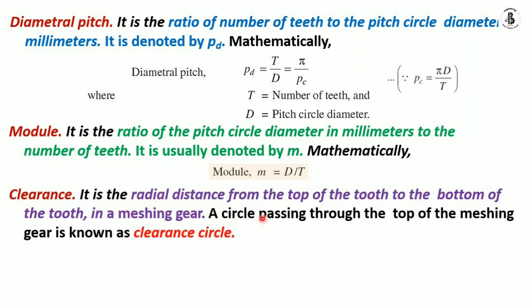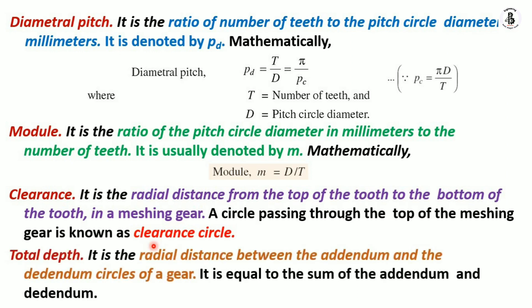Clearance is the radial distance from the top of the tooth to the bottom of the tooth in the meshing gears. A circle passing through the top of the meshing gear is known as a clearance circle, which is also necessary for meshing gears as it controls the wear and tear. Total depth of the tooth is the radial distance between the addendum circle and the dedendum circle, and it is equal to the sum of addendum and dedendum.